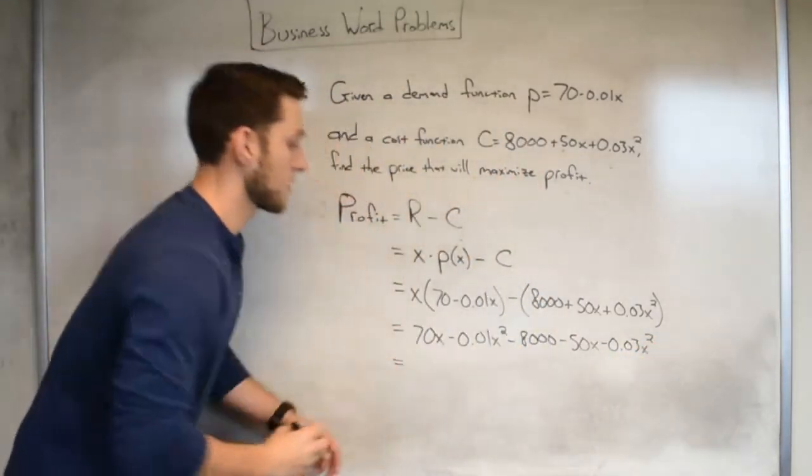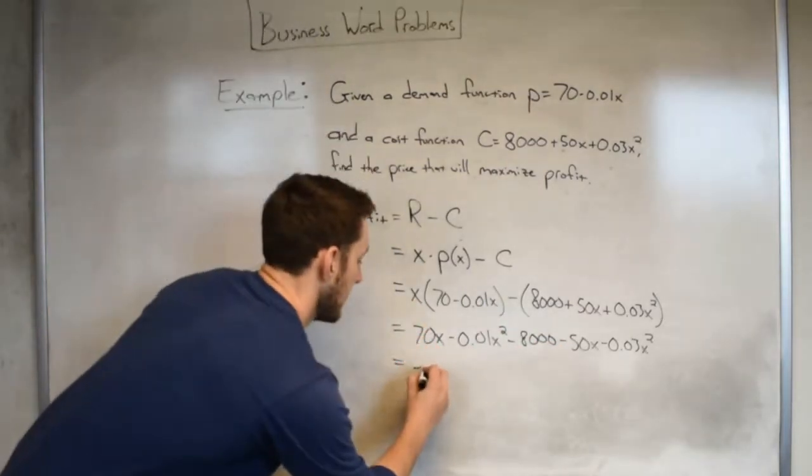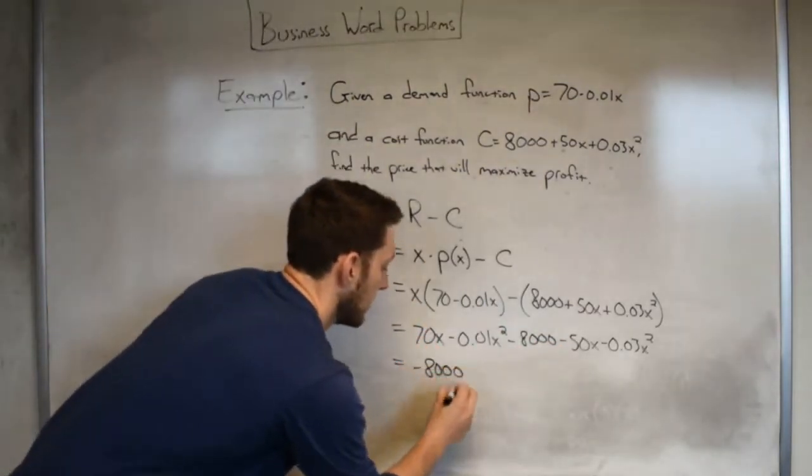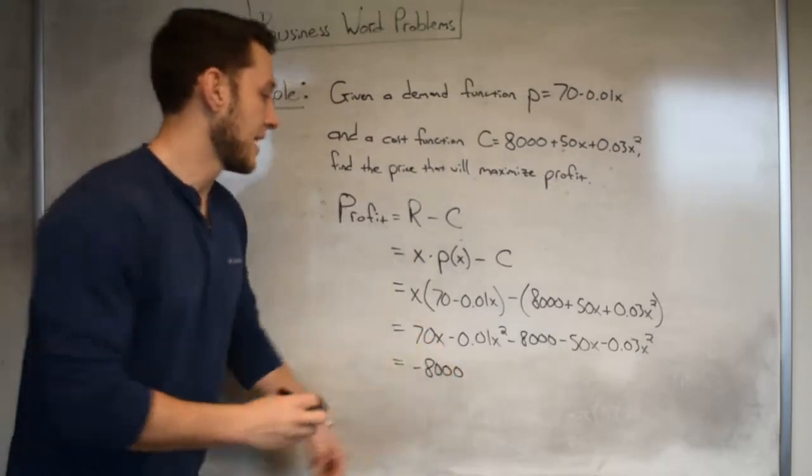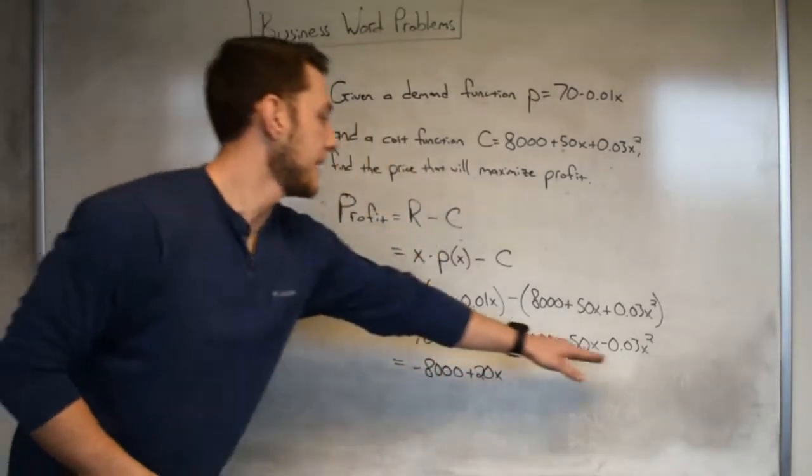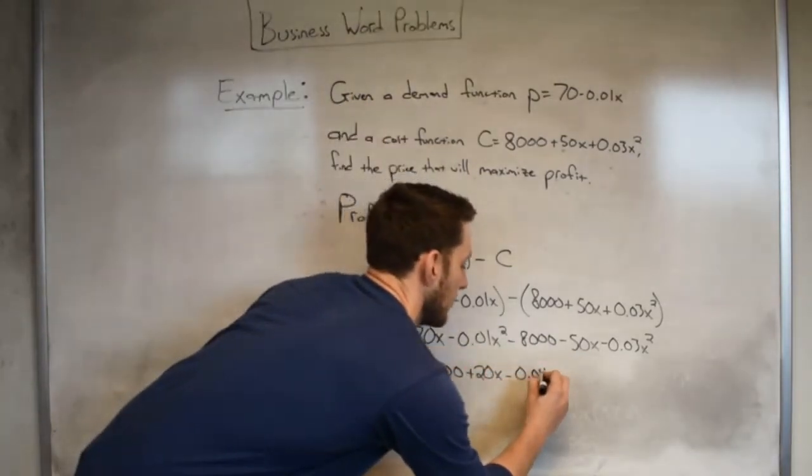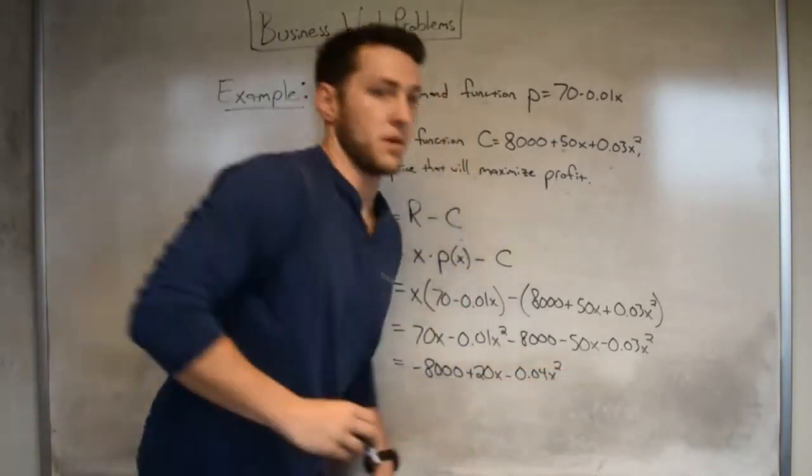Upon simplifying, first off distributing the x and distributing the negative, we'll get something like this: 70x minus 0.01x squared minus 8,000 minus 50x minus 0.03x squared. And upon combining like terms, noticing the 70x and the 50x, we can combine those. We'll get a function: negative 8,000 plus 20x and then minus minus, giving me minus 0.04x squared.